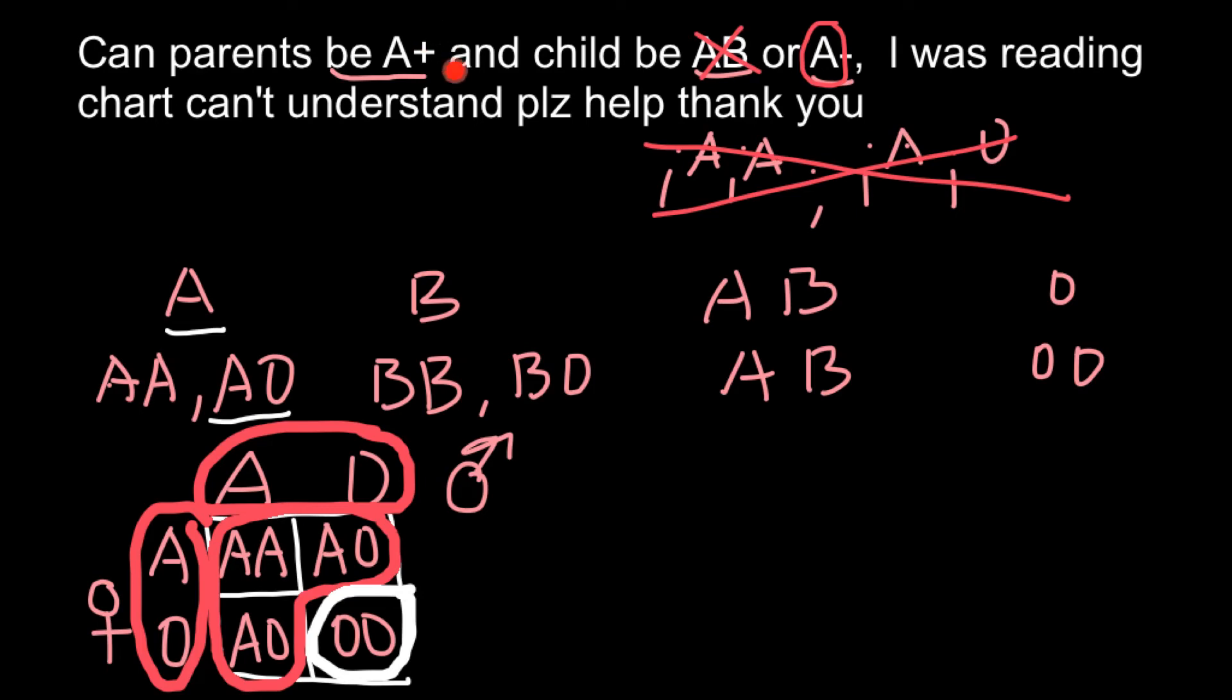Now, as for the Rh group, as you see, both parents are positive. We have found that they may have, of course, a child who would be also blood group A, but what about the negative sign here? Is it possible that two parents who are Rh positive may have a child who is going to be Rh negative?